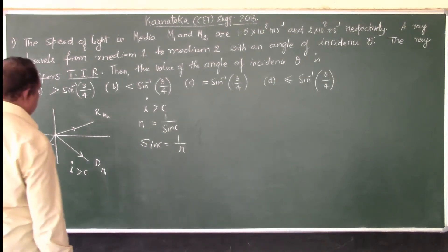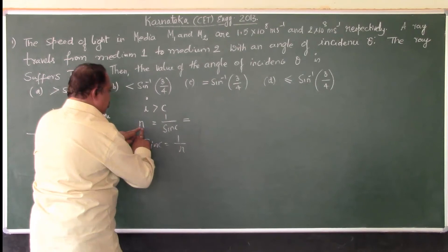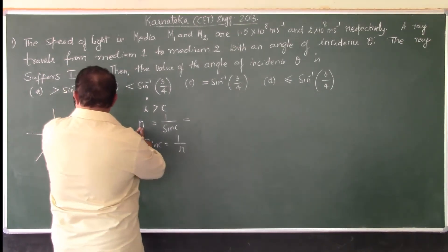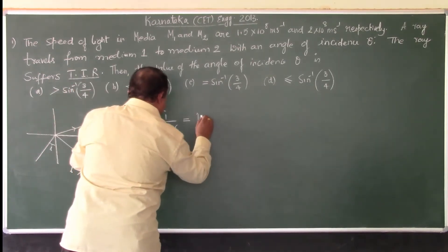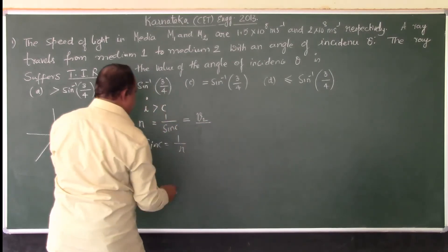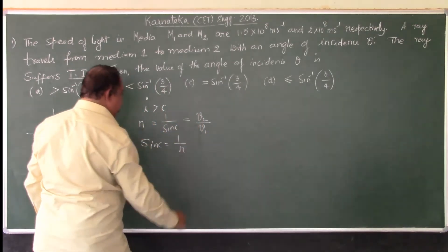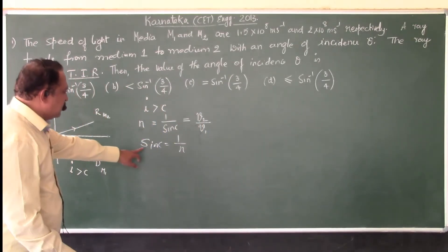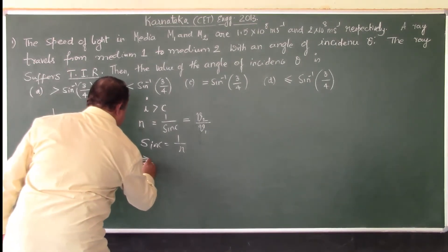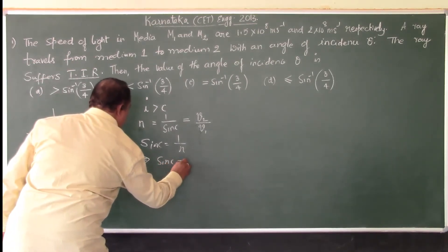And what is N actually? It is refractive index of the pair of media, which is given as velocity of light in medium 2 over velocity of light in medium 1. Now, since sin C is equal to 1 by N, this implies sin C is equal to reciprocal of this.